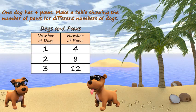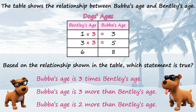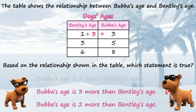And if you like math problems about dogs, you're in luck, because I've got another one. This one has to do with the ages of our friends. The table shows us the relationship between their ages, and we've got some options describing the relationship. This first one says that Bubba's age is three times Bentley's age, so we need the rule 'three times' to work for each row. One times three is three — that works. But three times three is nine, not five, so that's out. Let's check the next one: Bubba's age is three more than Bentley's age, meaning we're adding three. One plus three is four, not three — that one does not work.